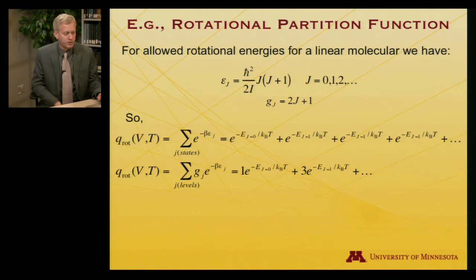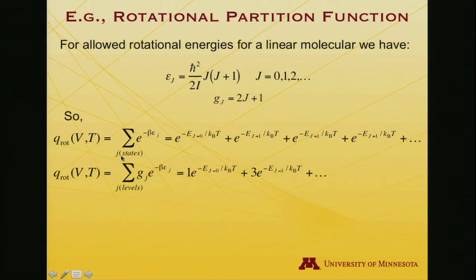So if I were to write out the rotational partition function summed over states, I'd get e to the 0th energy level plus e to the minus e over kT for the first rotational level, except it'll appear once, twice, three times. That's the degeneracy. And then I'd go to the second level, which would appear 2 times 2 plus 1, five times, and then seven times, and so on.